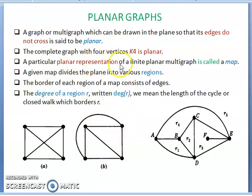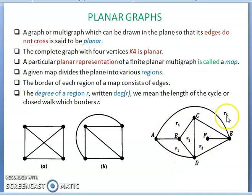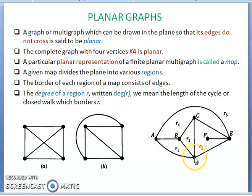A particular planar representation of a finite planar multi-graph is called a map. A given map divides the plane into various regions: R1, R2, R3, R4, R5. The outside region is R5. The border of each region of a map consists of edges. For R1, the border edges are AB, BD, and AD, covering that region. Similarly, R2, R3, R4, and the outside region R5.